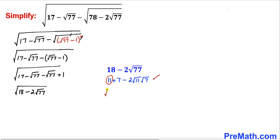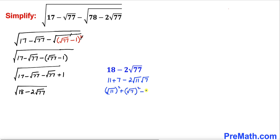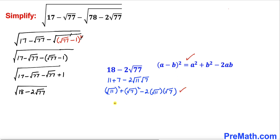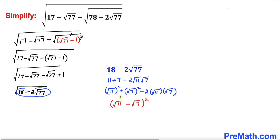11 can be written as square root of 11 whole squared, and 7 can be written as square root of 7 whole squared. So the whole thing becomes square root of 11 whole squared, plus square root of 7 whole squared, minus 2 times square root of 11 times square root of 7. Applying the identity a minus b whole squared again, this becomes square root of 11 minus square root of 7, whole squared.